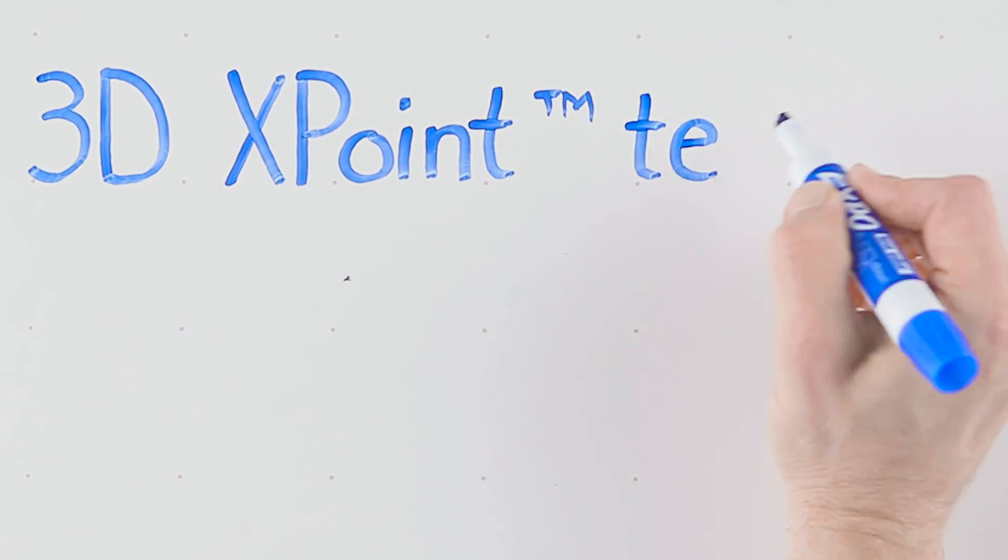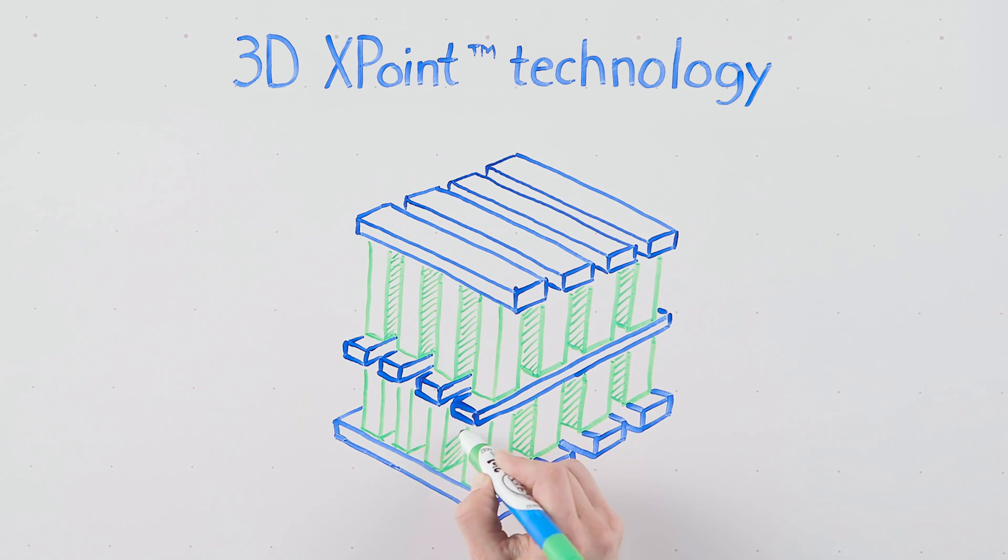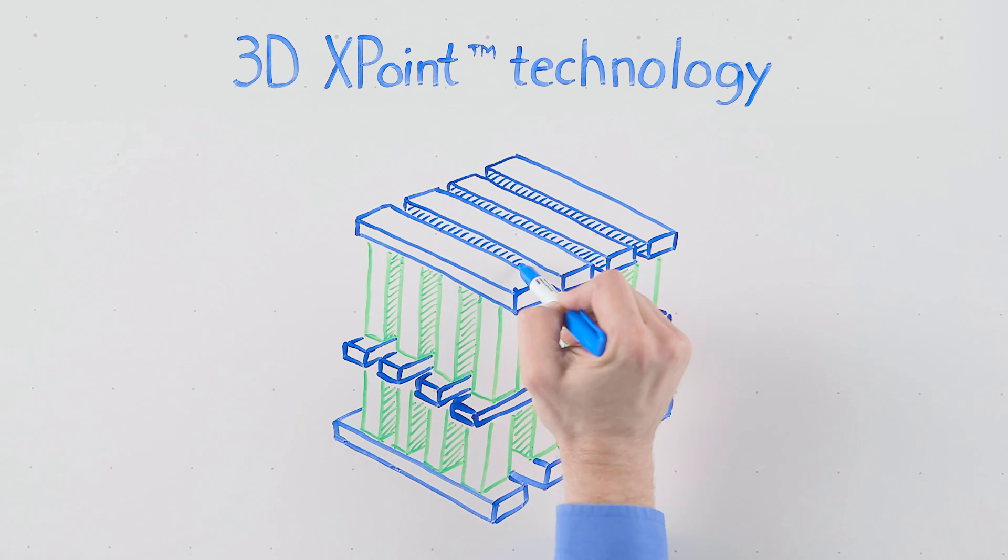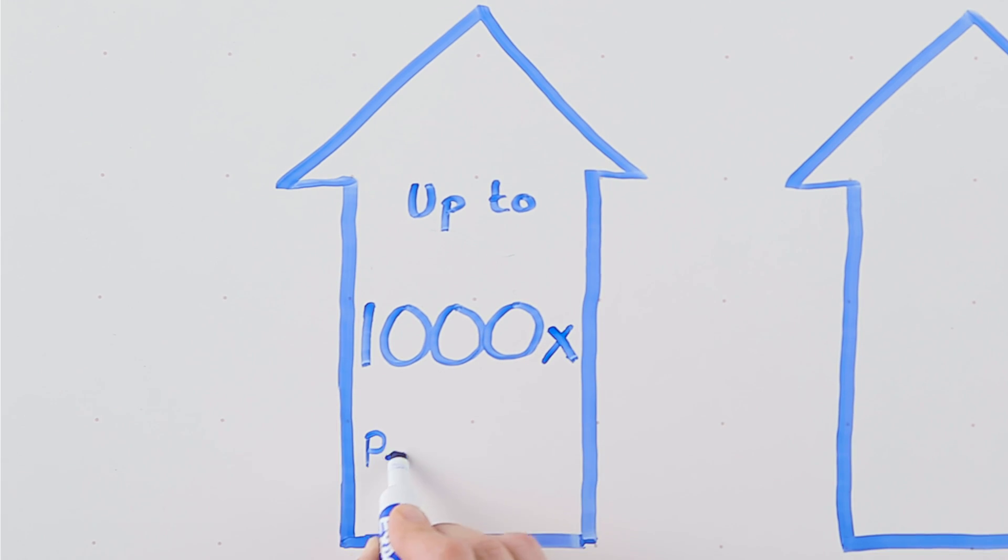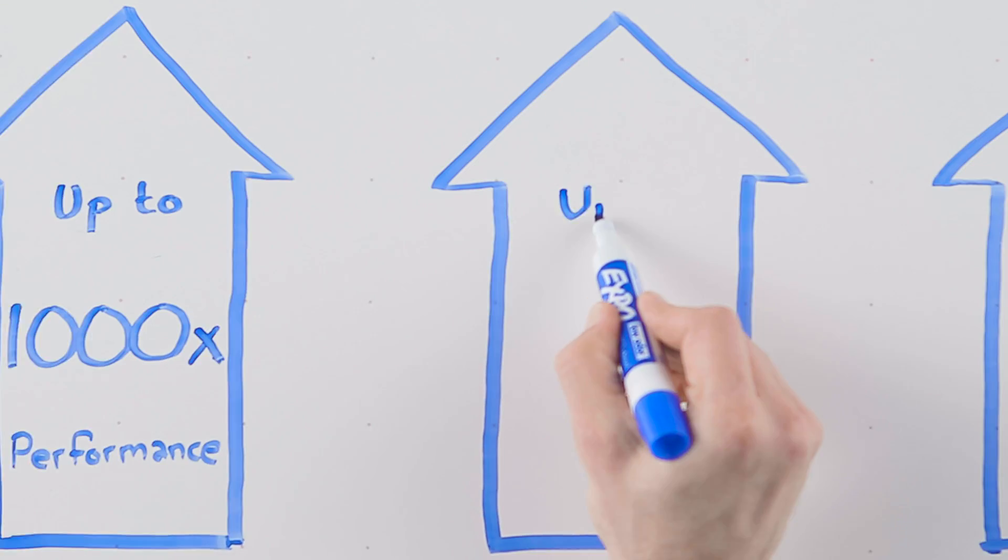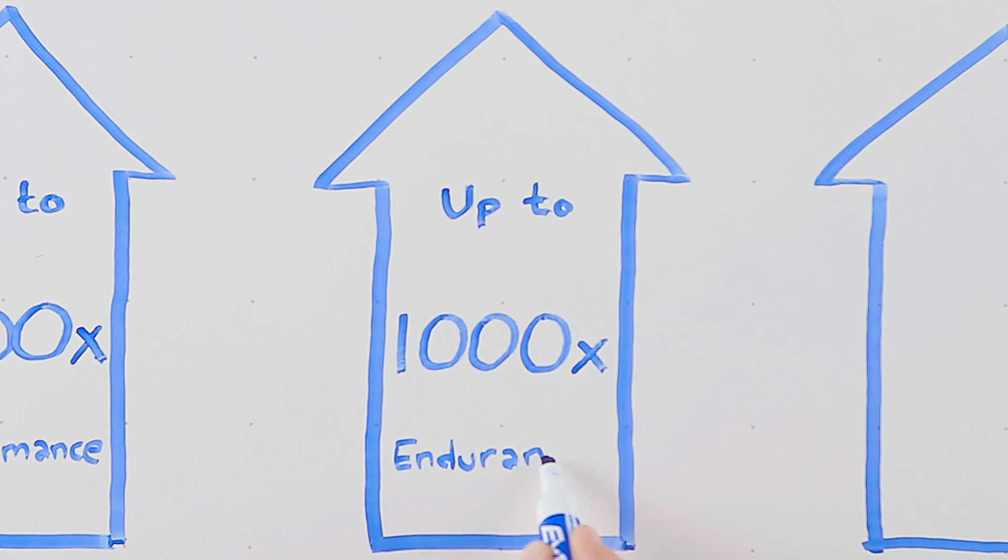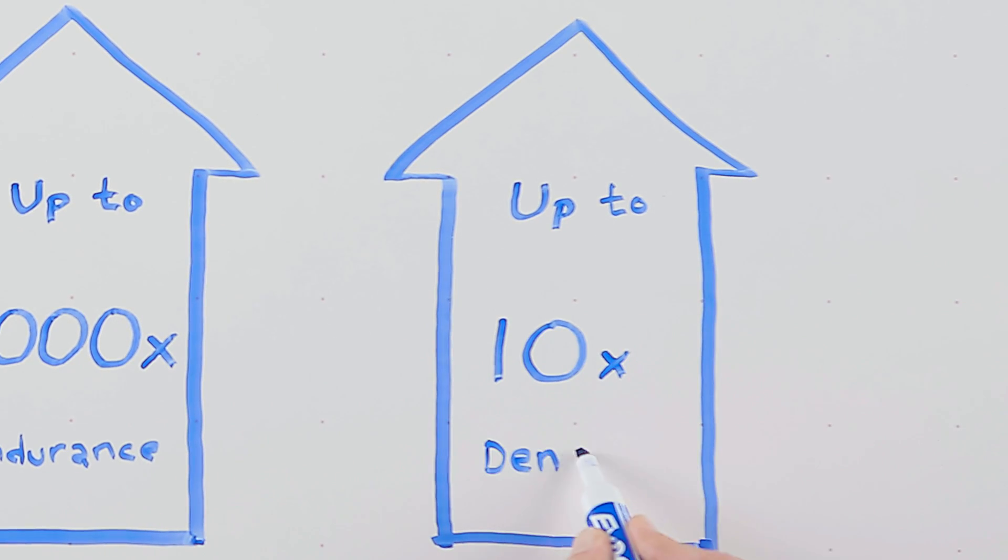In July of 2015, Intel and Micron introduced a brand new memory technology called 3D Crosspoint technology. 3D Crosspoint technology is going to offer 1,000 times the performance of NAND, 1,000 times the endurance of NAND, and 10 times the density of DRAM.